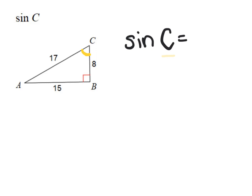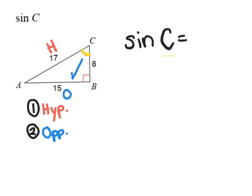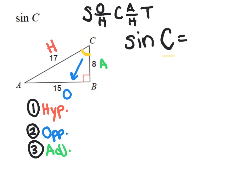Now if I label my sides, as we always do in order, you first want to label your hypotenuse, which is the 17, the opposite, which is the 15, because it's across from the angle, and our adjacent, which is the remaining side of eight. Now since it's sine of C, our relationship that we use is SOH-CAH-TOA. So since it's sine of C, we know it's going to be sine of C is the opposite over the hypotenuse.